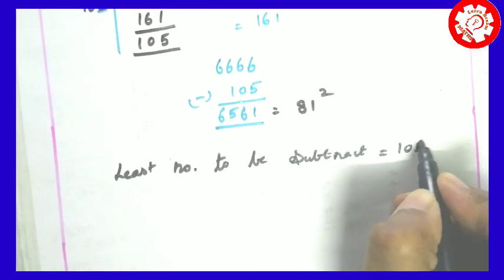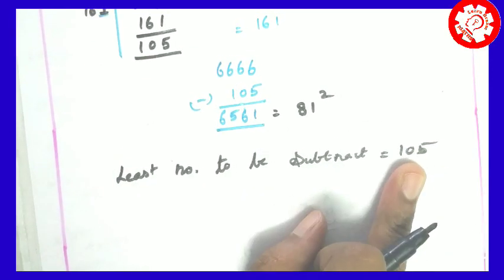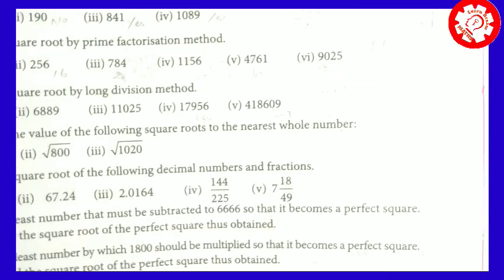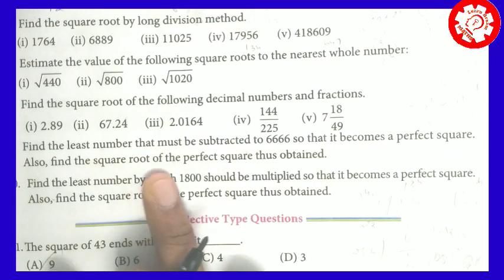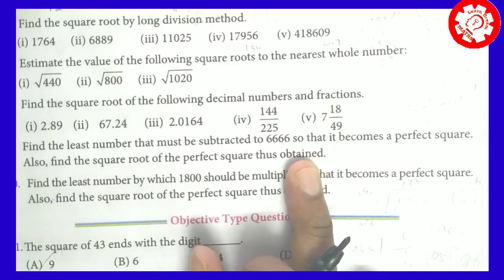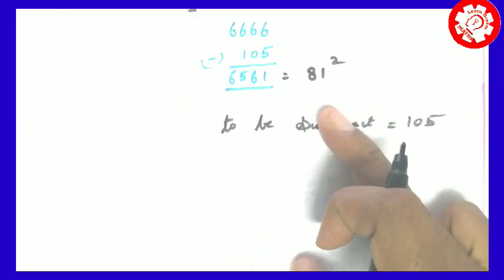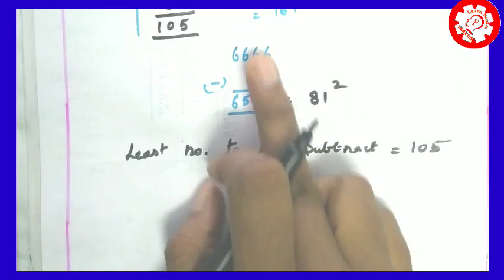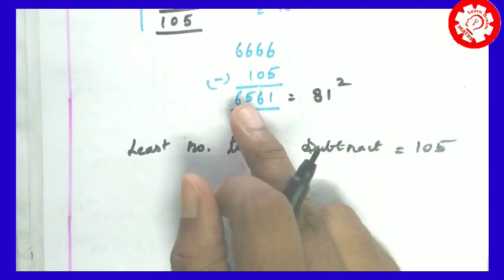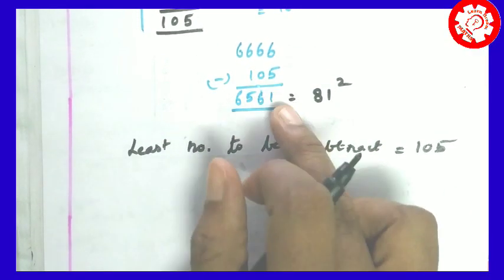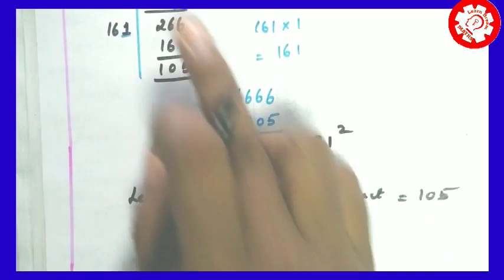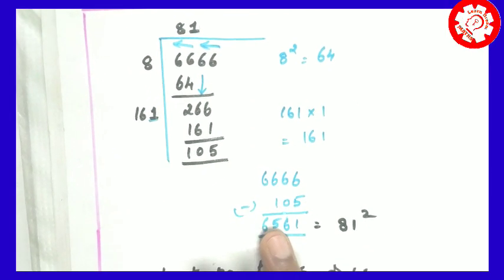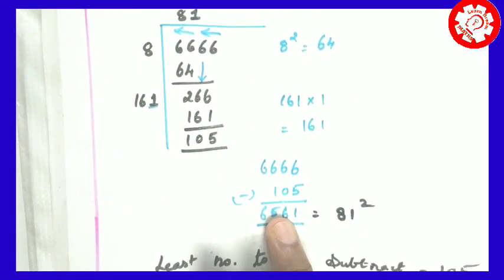The remainder is 105. That is the answer. The least number to be subtracted is 105. Also, find the square root of the perfect square thus obtained — the square root is 81. So you have to verify: 81 squared gives 6561, which is correct.